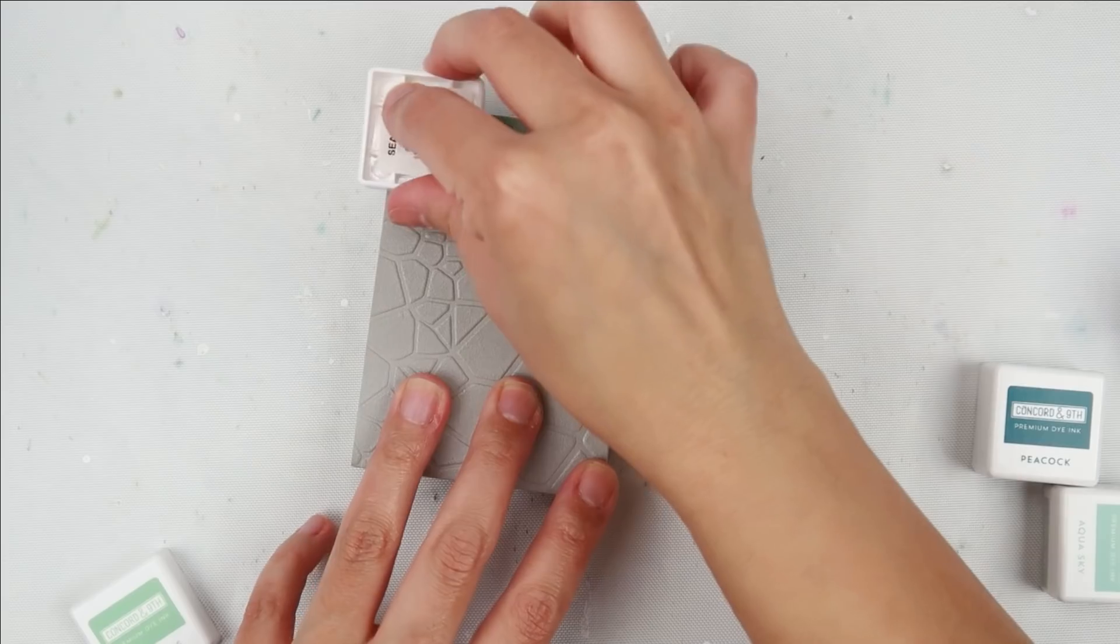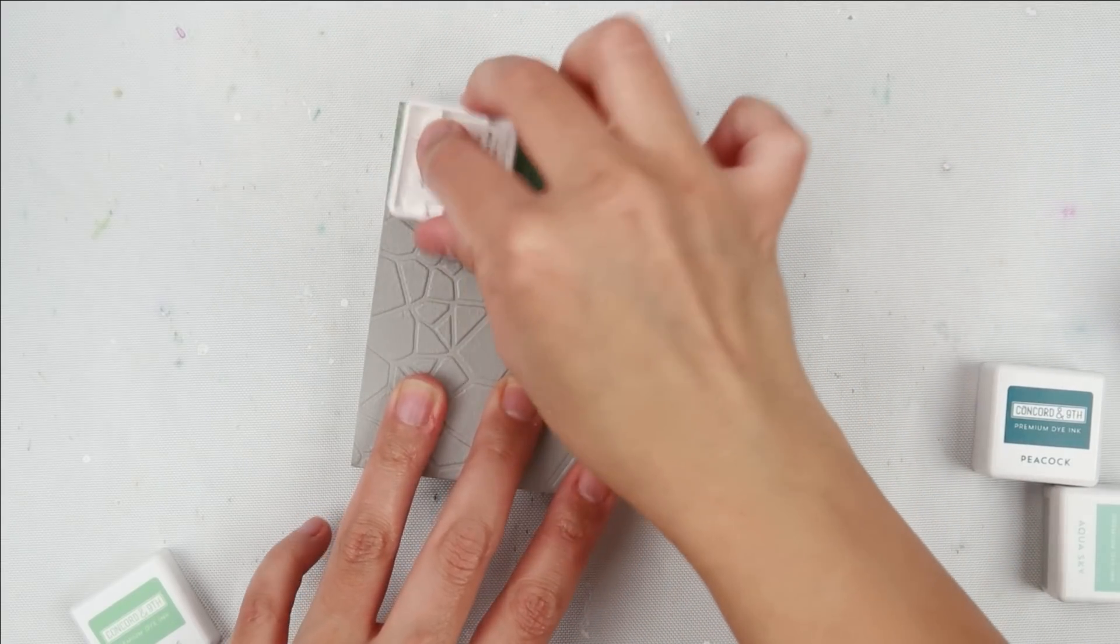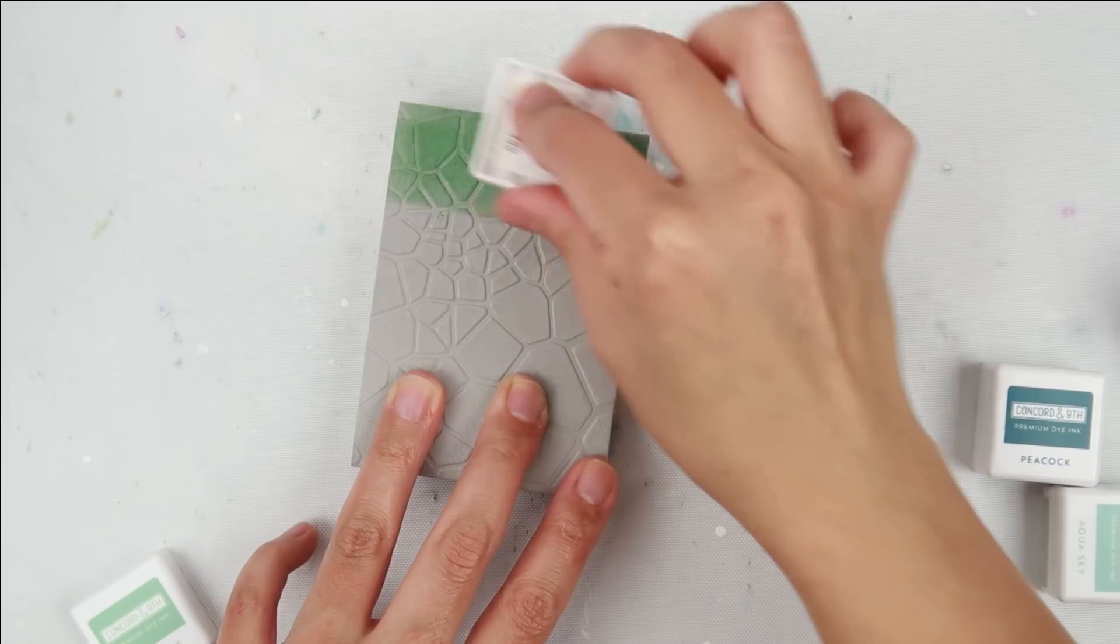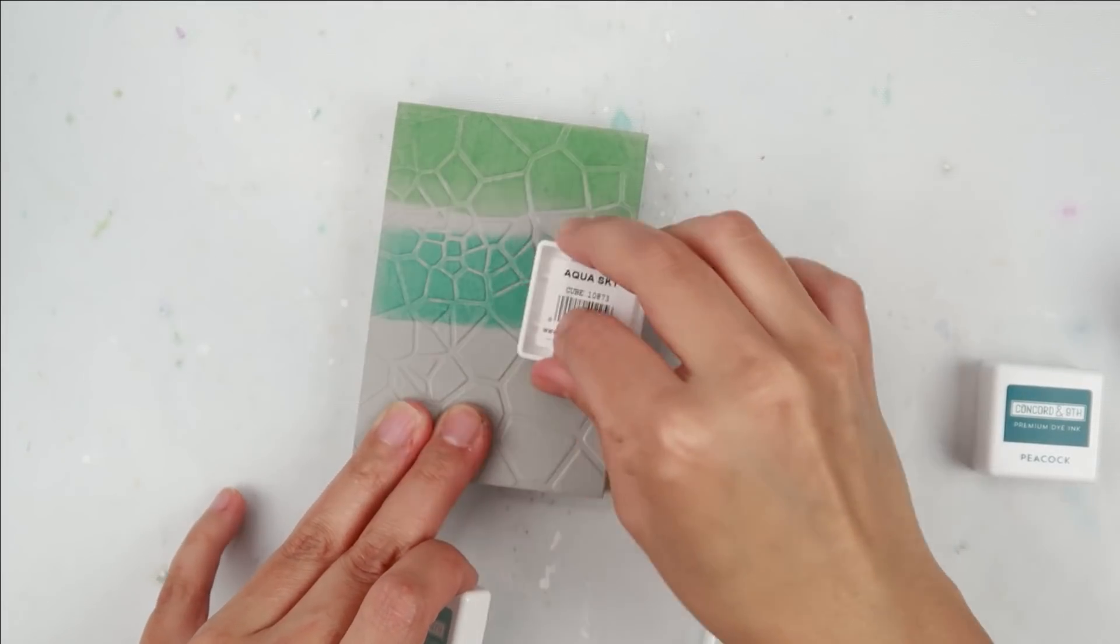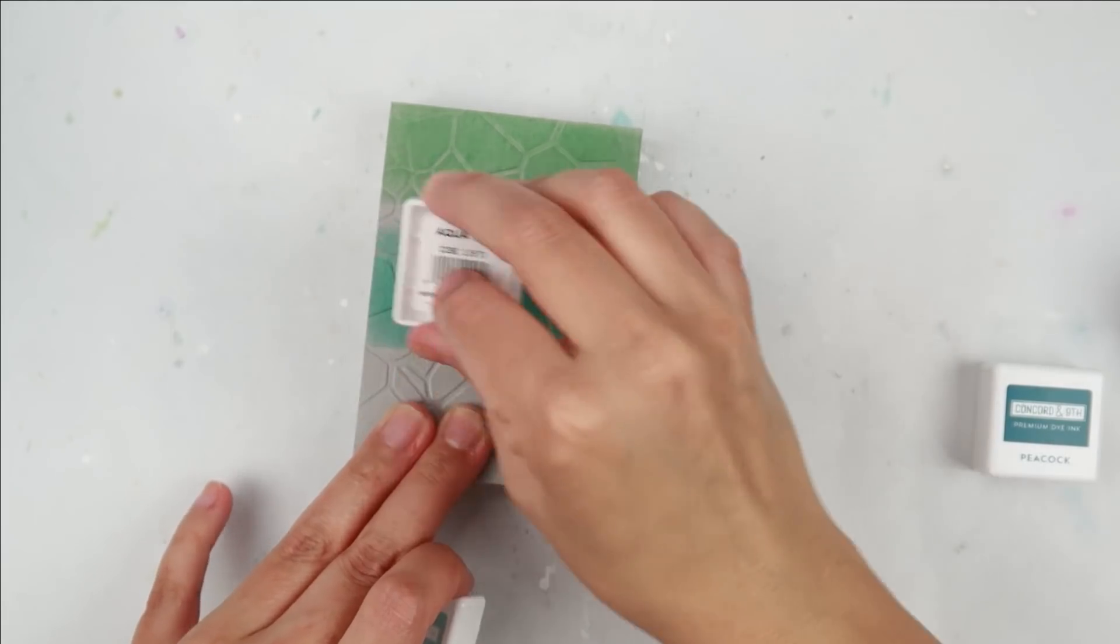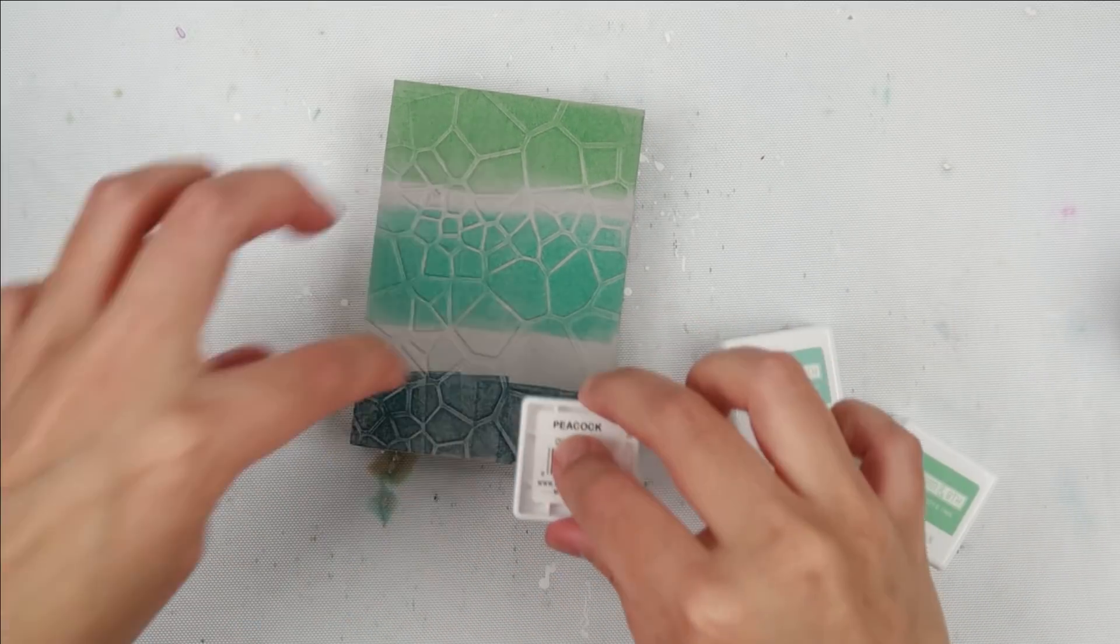Now I'm going to take some ink and I'm going to ink up the foam. This way I can use it as a stamp. I am aiming more for an ombre effect on this one. So I am taking three ink cubes from Concord and Ninth and I am just inking up the foam.